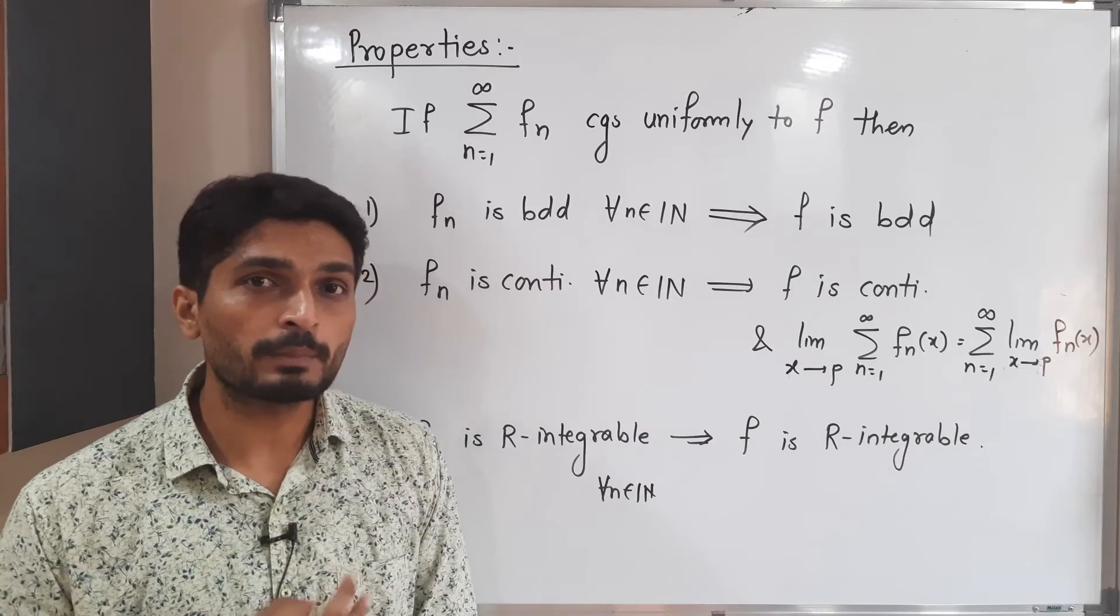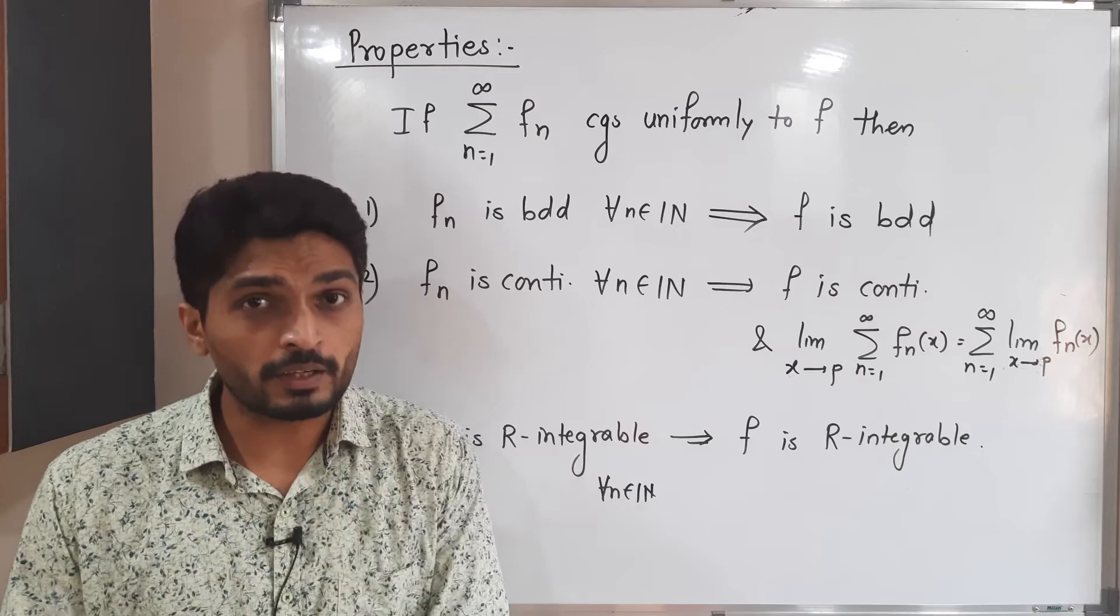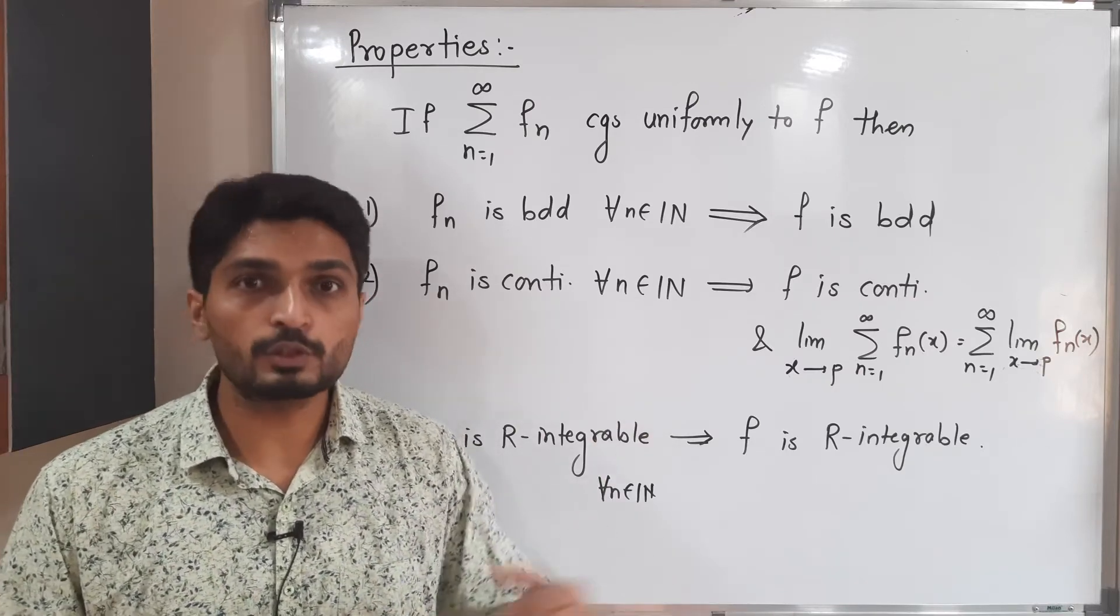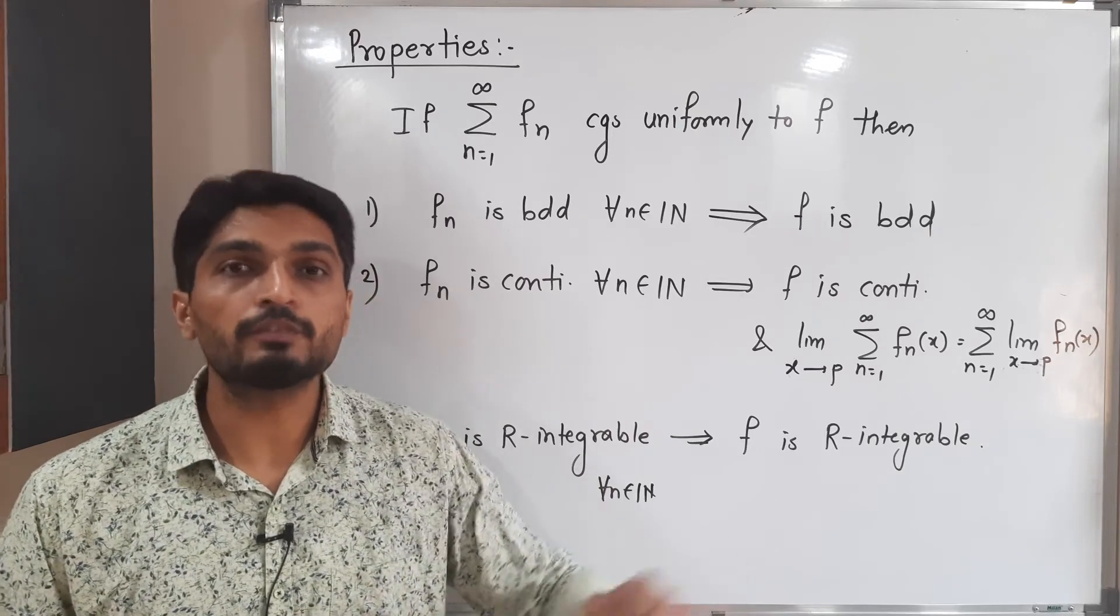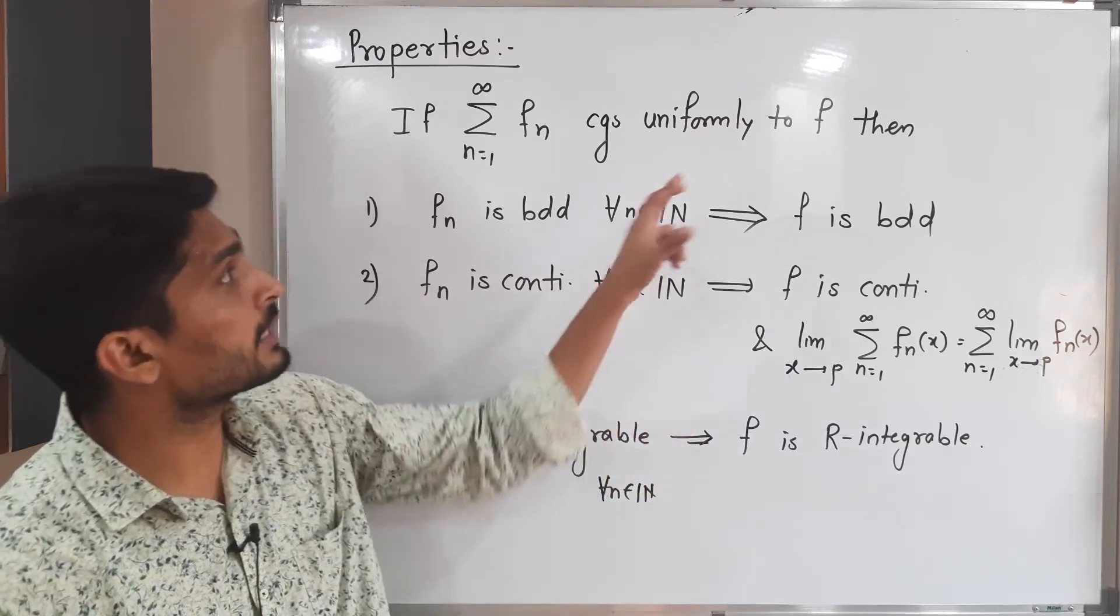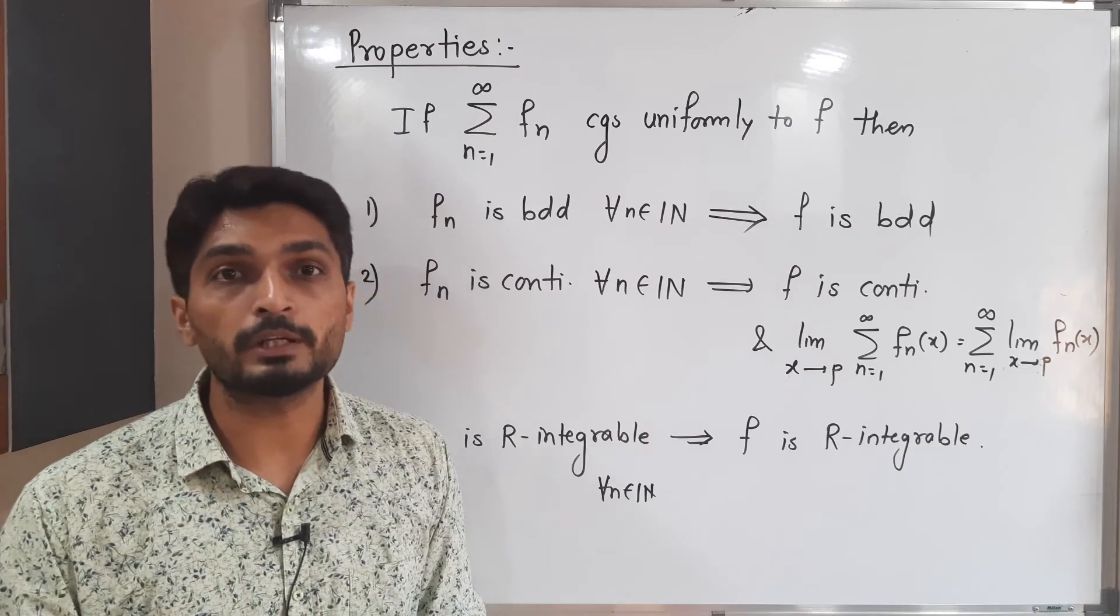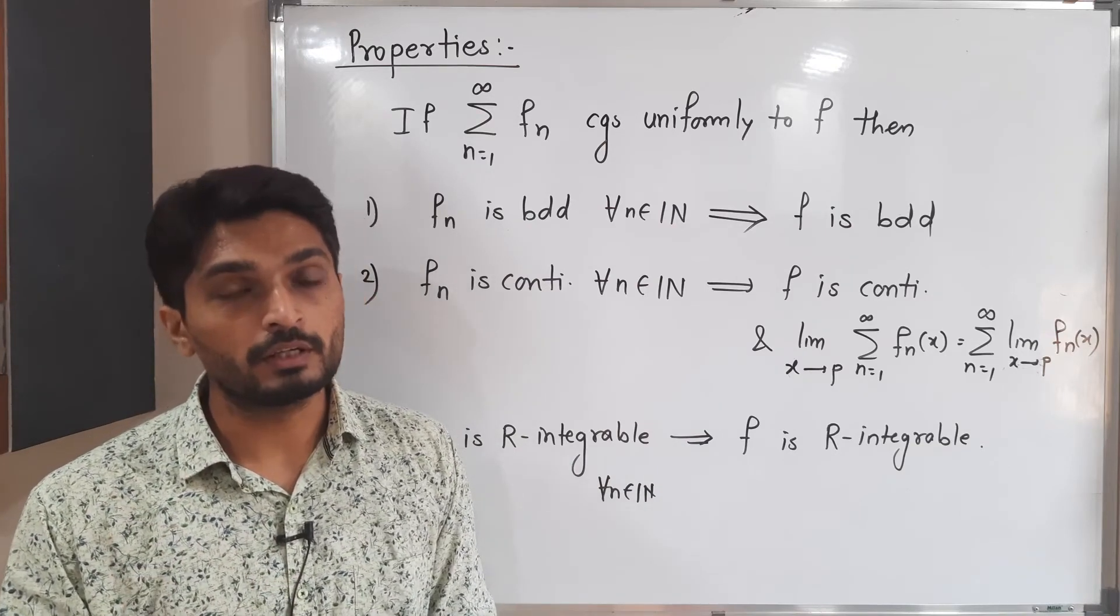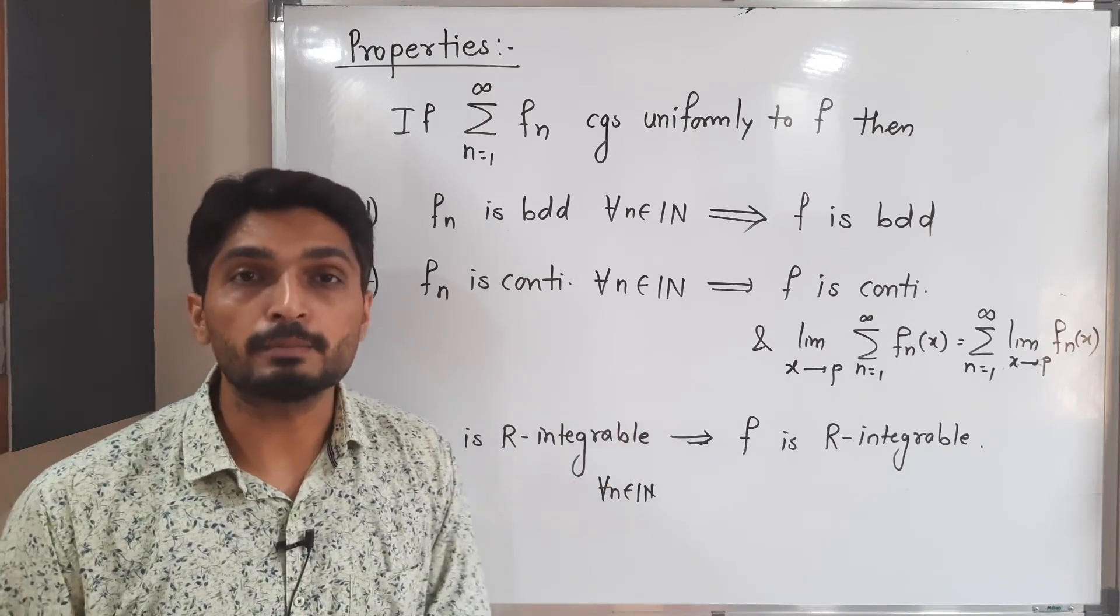These are very important things I would like to revise. If each fn is bounded then f is also bounded. If each fn is continuous, f is also continuous. And if each fn is Riemann integrable, f is also Riemann integrable. But what is f? f is the limit of that series and that series converges uniformly to f. That uniformly word is very important. If that convergence is uniform then only we get these three beautiful properties.